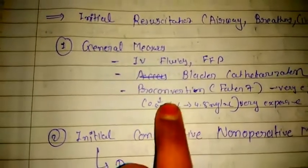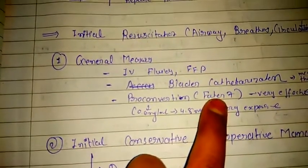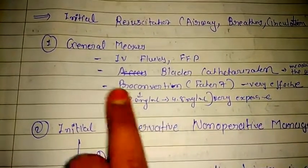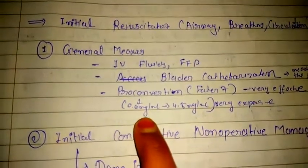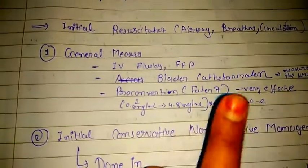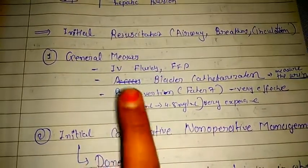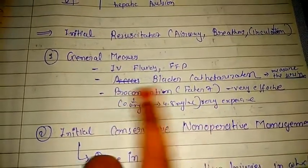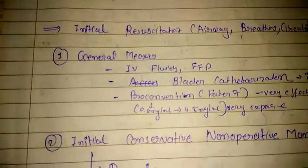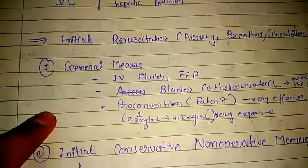Then proconvertin, which is coagulation Factor VII, is given — it is very effective. The dose is 0.6 mg/mL to 4.8 mg/mL. It is expensive but very effective. These are the general measures that must be performed.